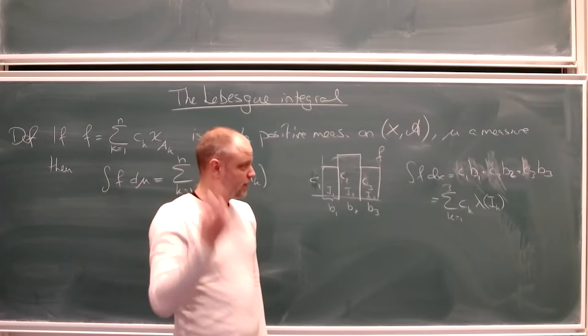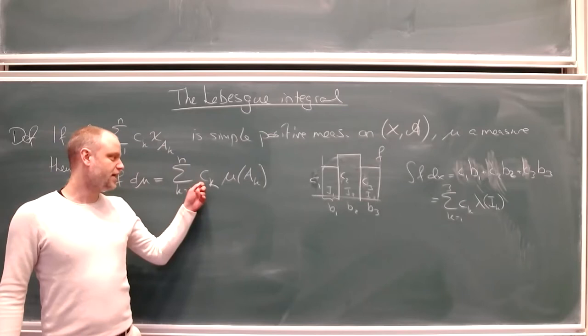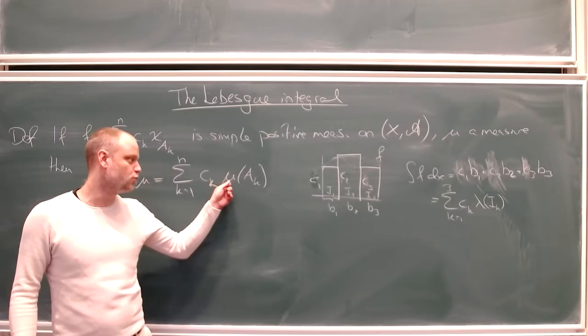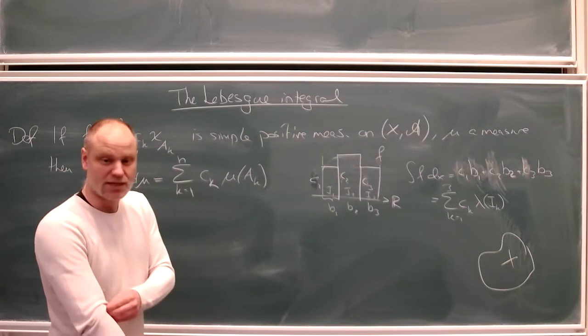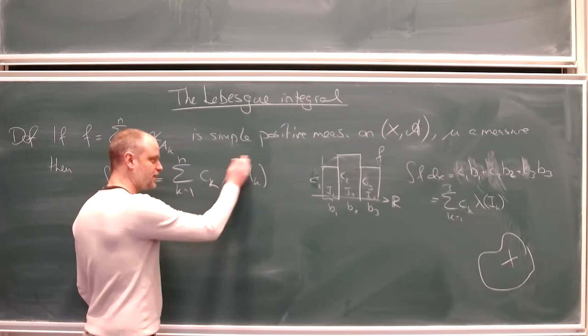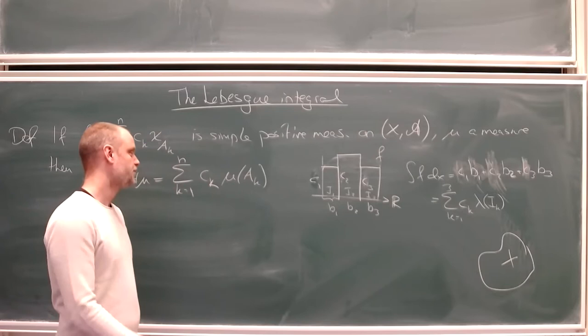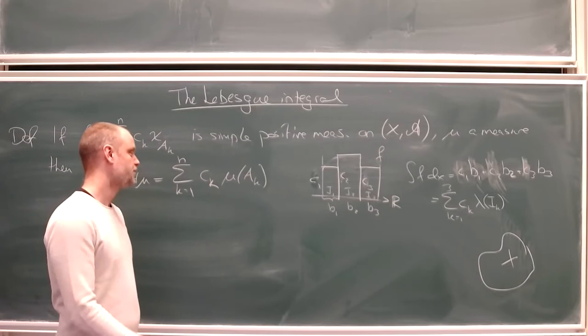It's exactly the same idea here: we take the height times the size of the base. The only new thing is that we are now measuring with mu, which tells us the size. And we are no longer restricted to the real line — we can be on any space X that can basically be anything, as long as we can measure sizes of sets.